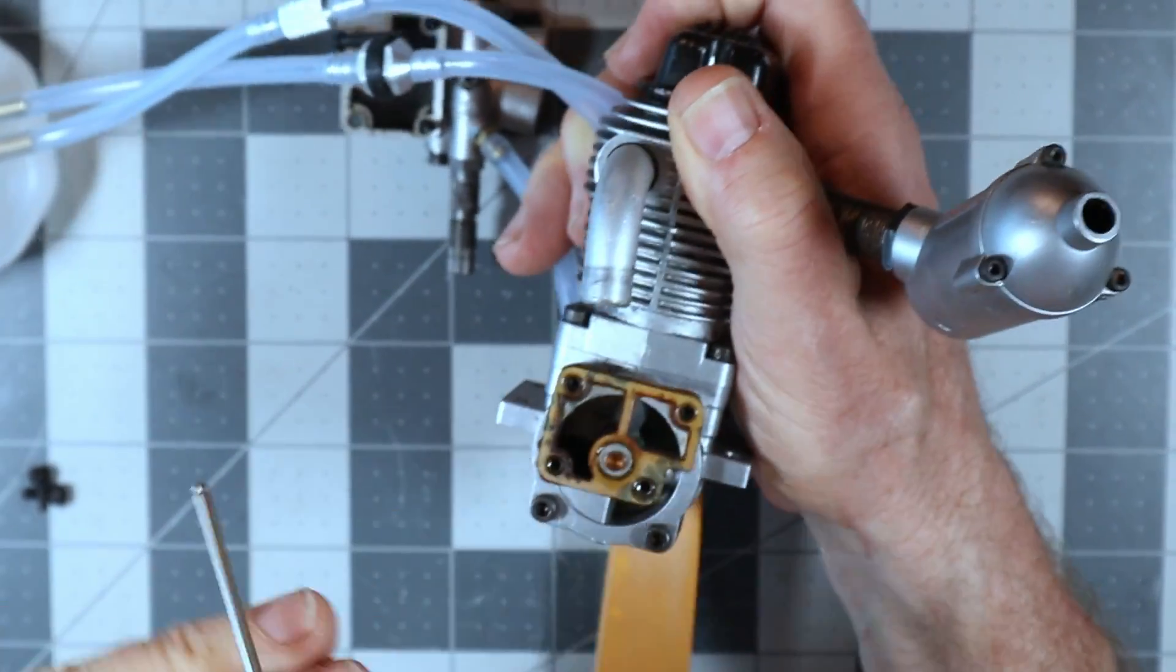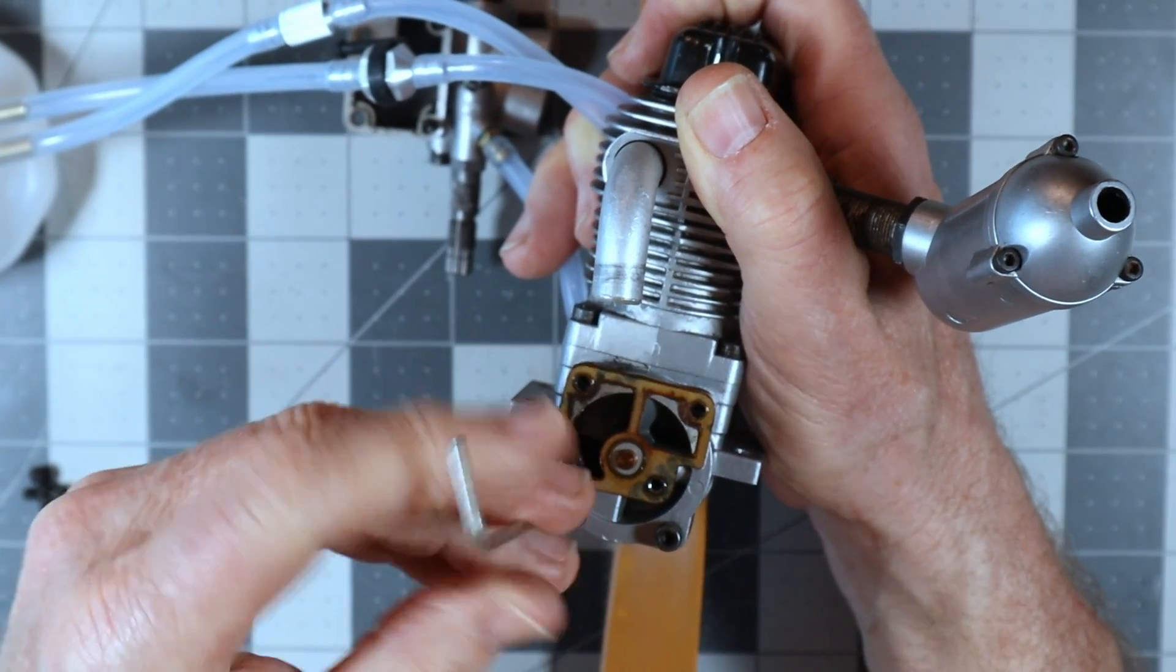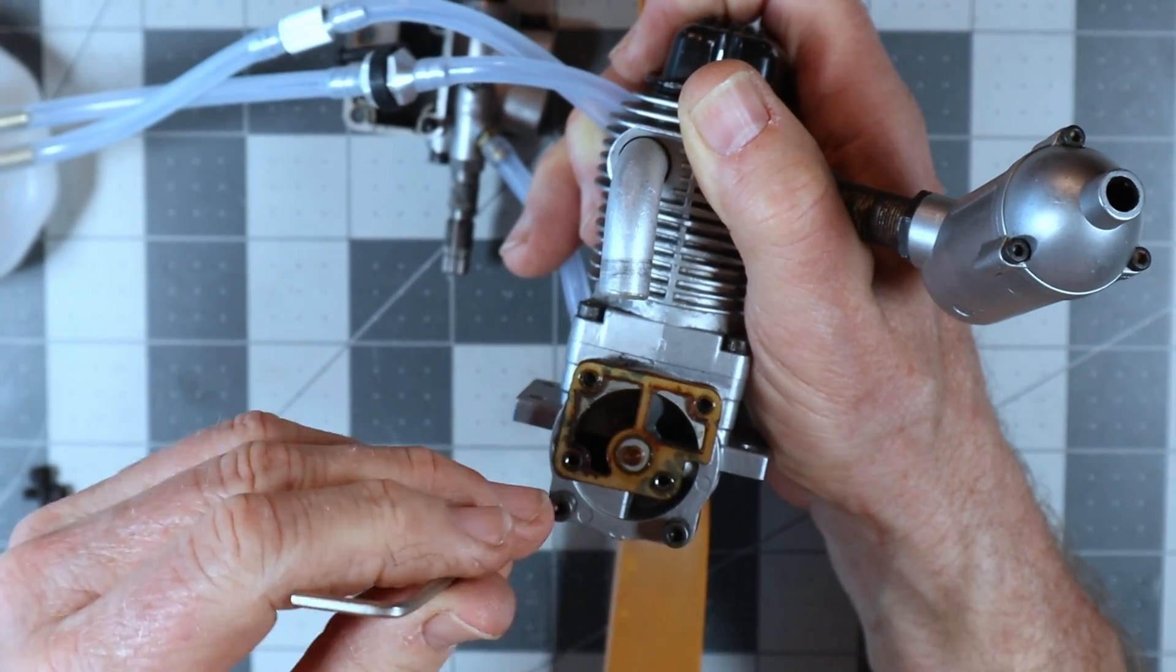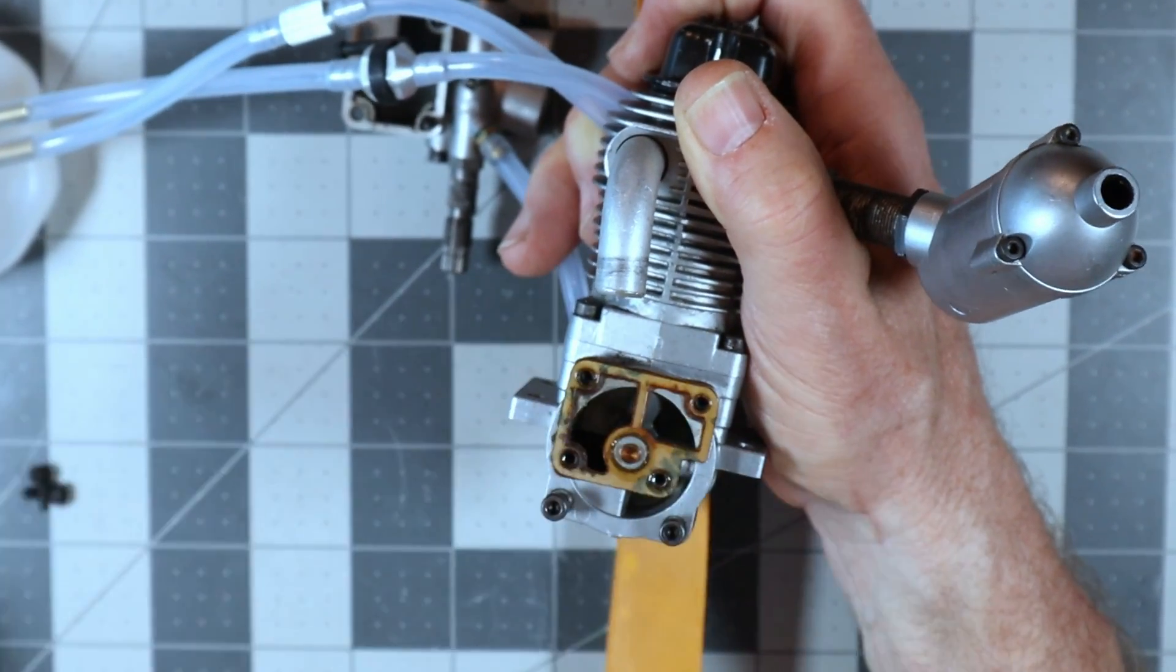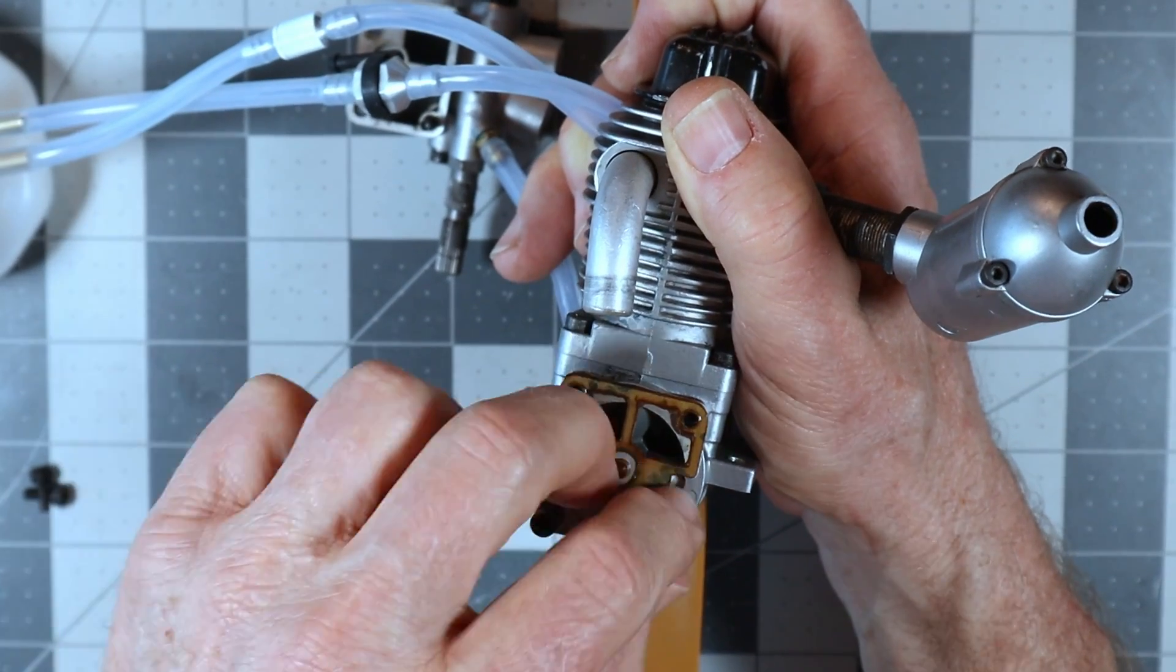Now the other thing about this is I'm holding the prop because I don't want to misalign the crankshaft to the back plate hub. Because those of you that have never seen the inside of a YS engine, it does engage in a thing.